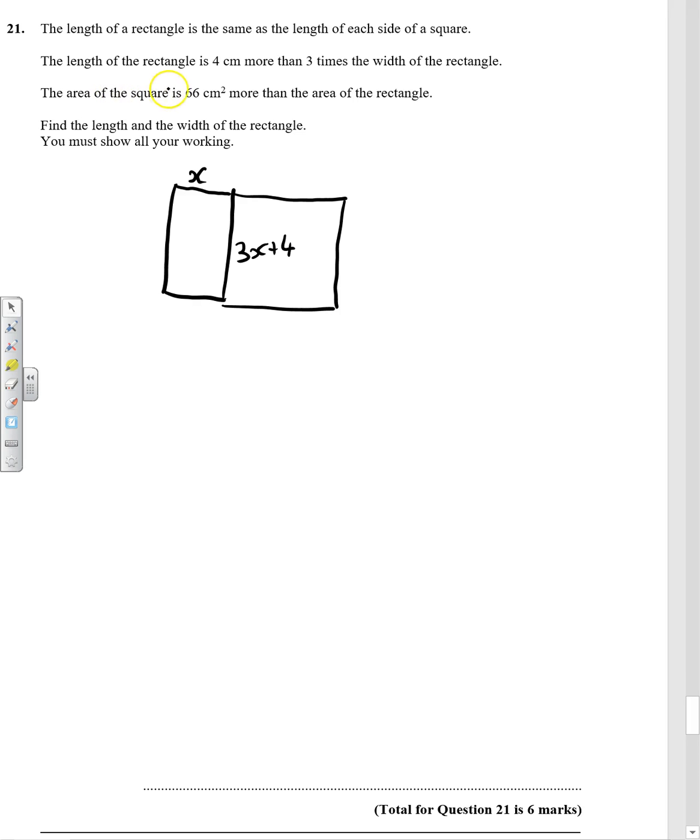Now, the area of the square is 66 centimeters more than the area of the rectangle. So if we can compare the two areas, the area of the rectangle is basically x times 3x plus 4. Now we can put them equal to each other. It's equal to the area of the square, but the square is 66 more.